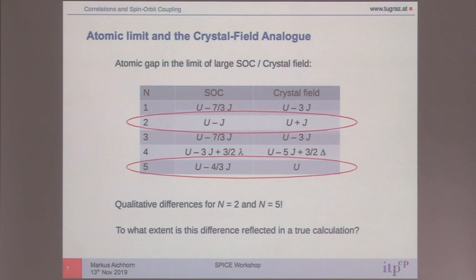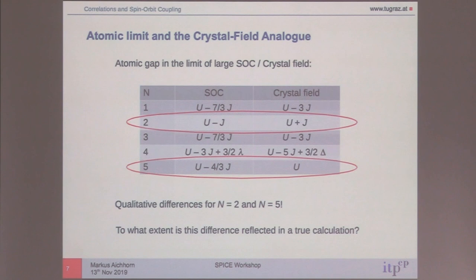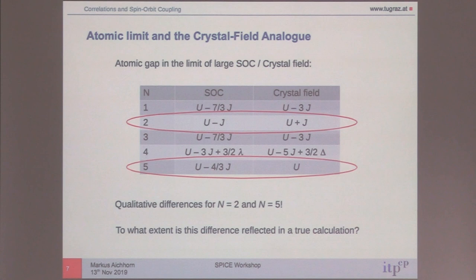An audience discussion ensues about whether lambda is ever truly larger than the Hund's coupling in real materials. In the iridate, lambda is about 0.4 and the Hund's coupling is about 0.2 to 0.5, so they are comparable. The speaker acknowledges that lambda is never much larger in real 5D materials — they are at best comparable — and moves on to the calculations.